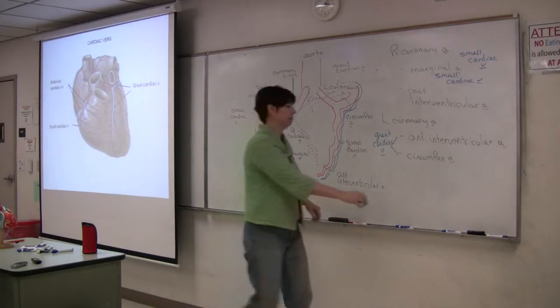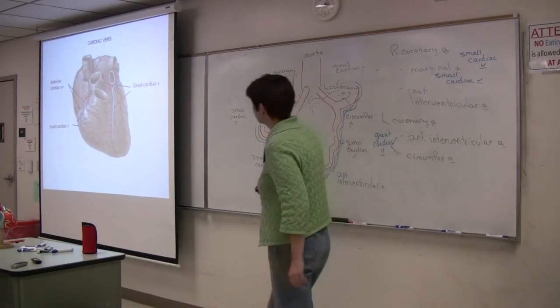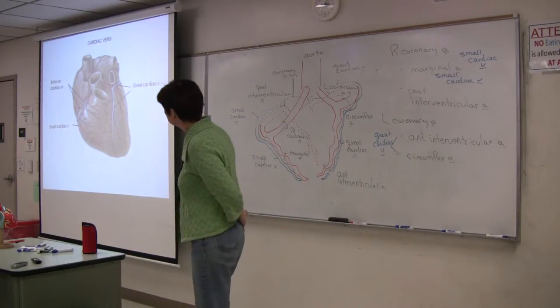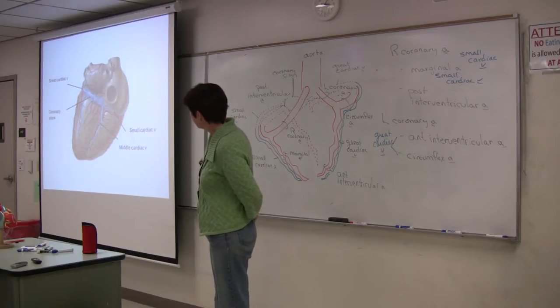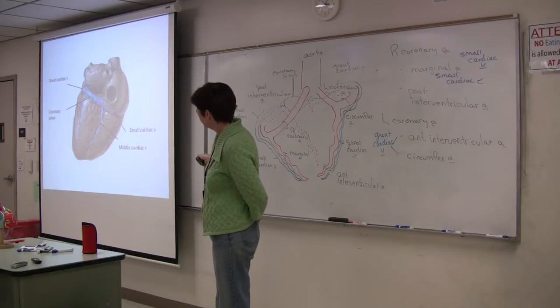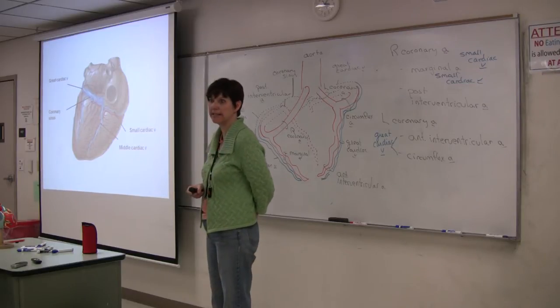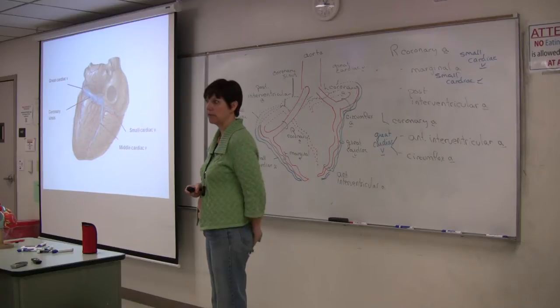And again, here's the small cardiac vein, and here it is coming around. Here's the coronary artery forming posterior interventricular artery, but the coronary vein is going right into the coronary sinus, okay, on the posterior surface.